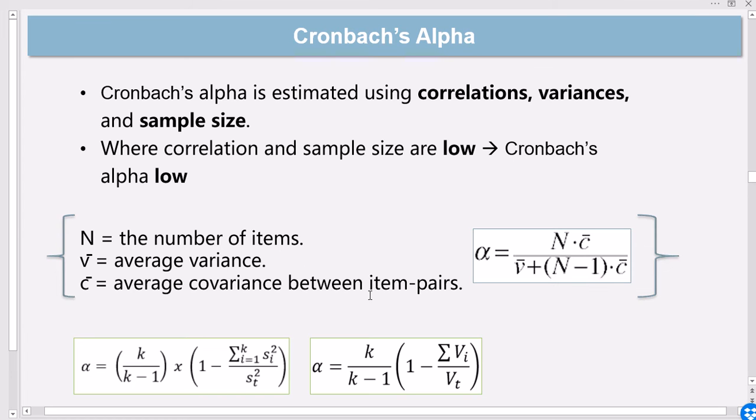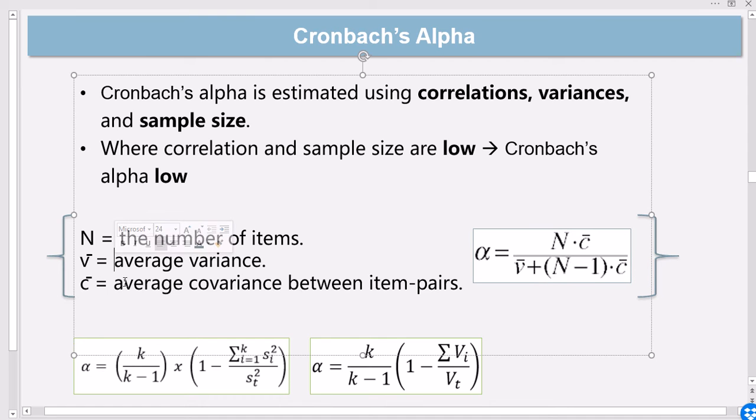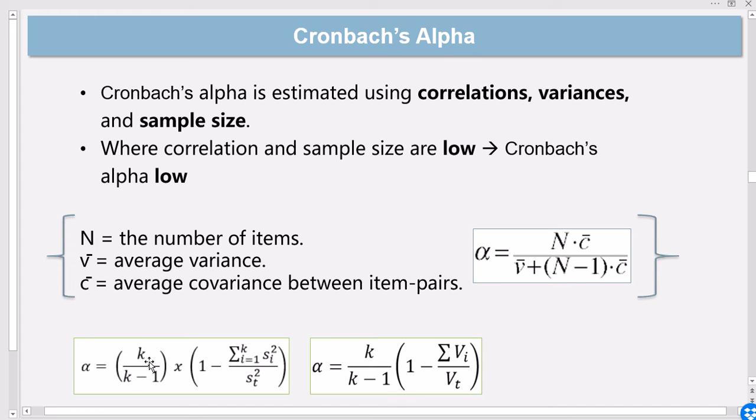Cronbach's alpha rests upon a few concepts: one is the number of items, the other one is the average variance. According to this formula, Cronbach's alpha is conceptualized as a function of a few concepts like covariance—that's v-bar, the average variance—and then c-bar, which is the average covariance between item pairs.